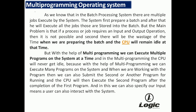Next is the multiprogramming operating system. In batch processing, multiple jobs are executed, but the system first prepares a batch then executes all jobs stored in it. The main problems are: if a process requires an input/output operation it is not possible, and there is wastage of time while preparing the batch since the CPU remains idle. Multiprogramming solves this by allowing multiple programs to execute at the same time.